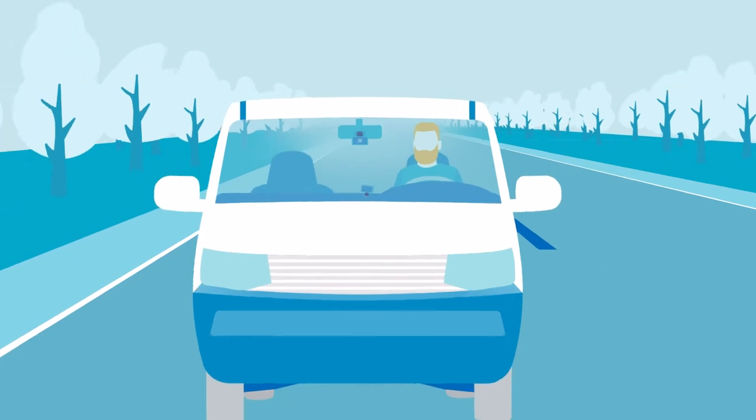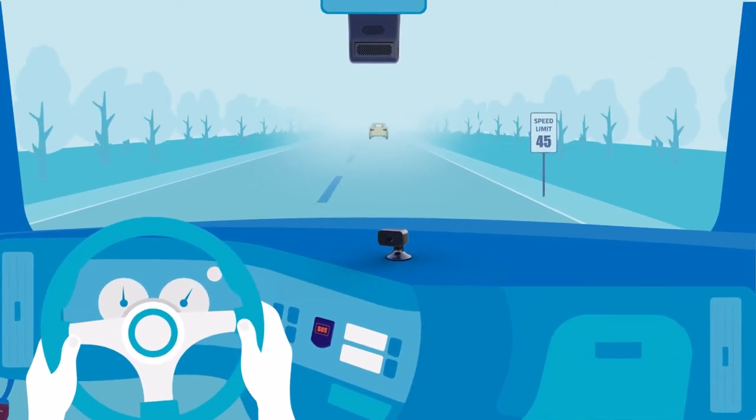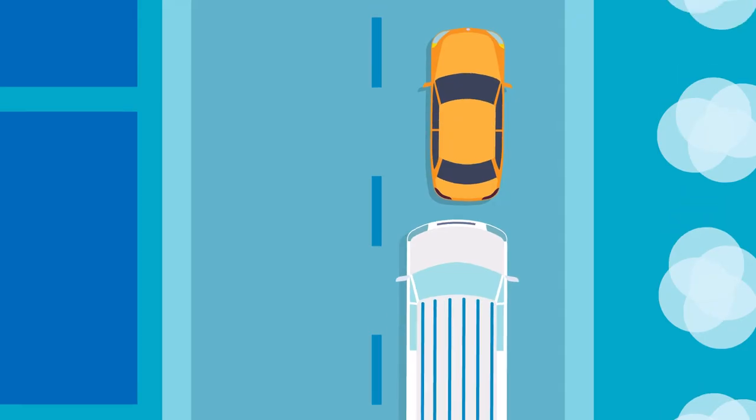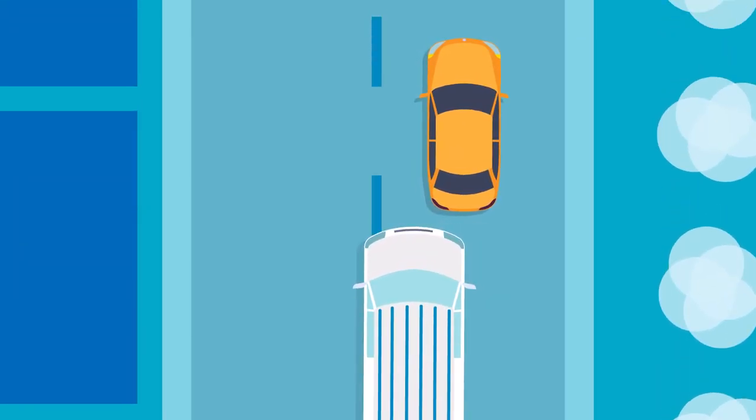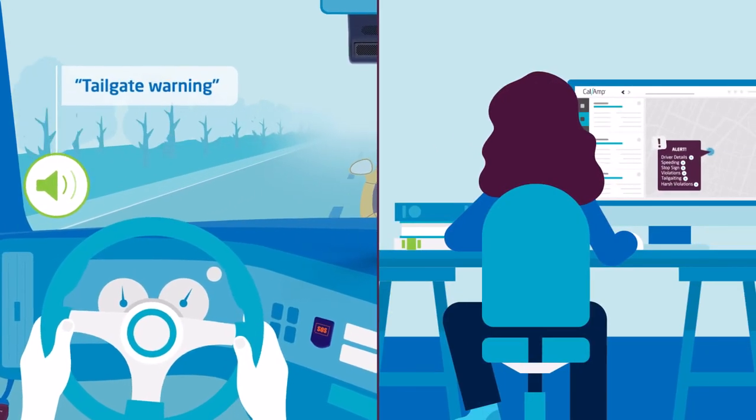The cameras record shortly after the engines turn on and use artificial intelligence to detect risky driving, like speeding, stop sign violations, tailgating and lane departure, prompting an audible alert for drivers and a visual alert for fleet managers.